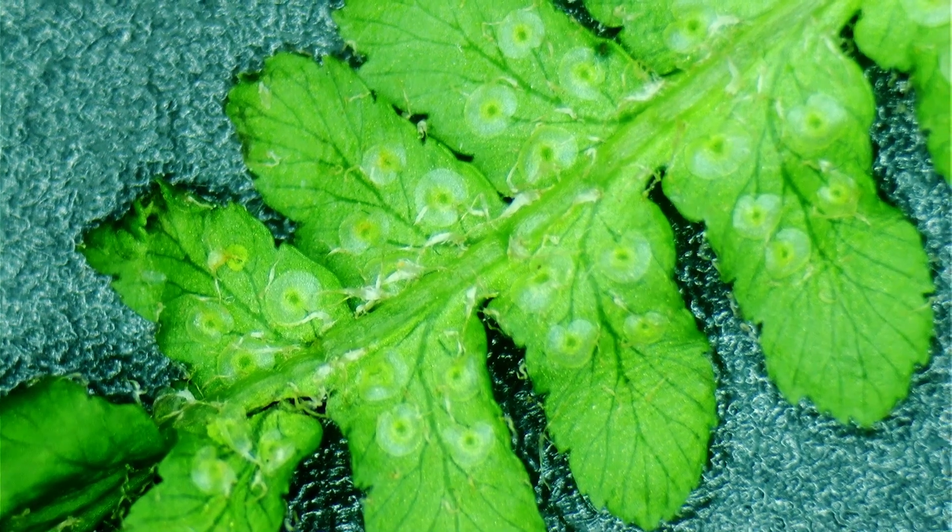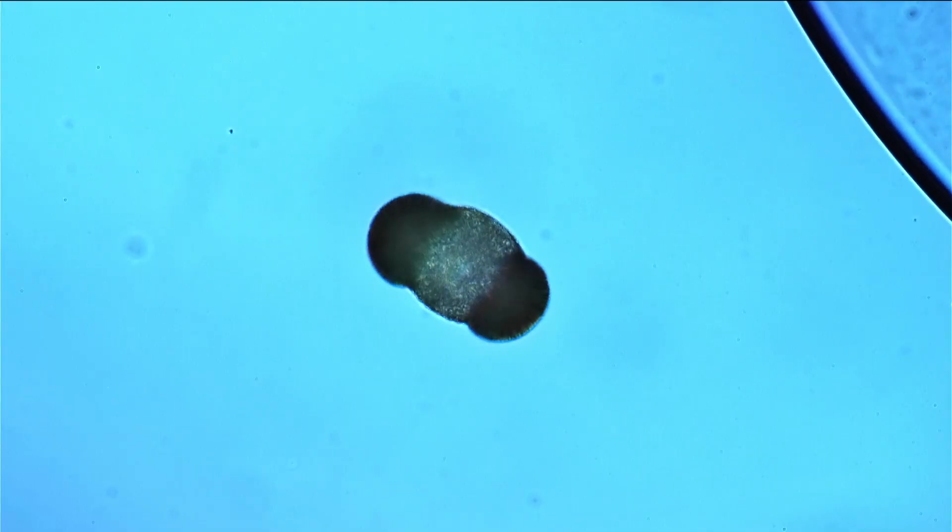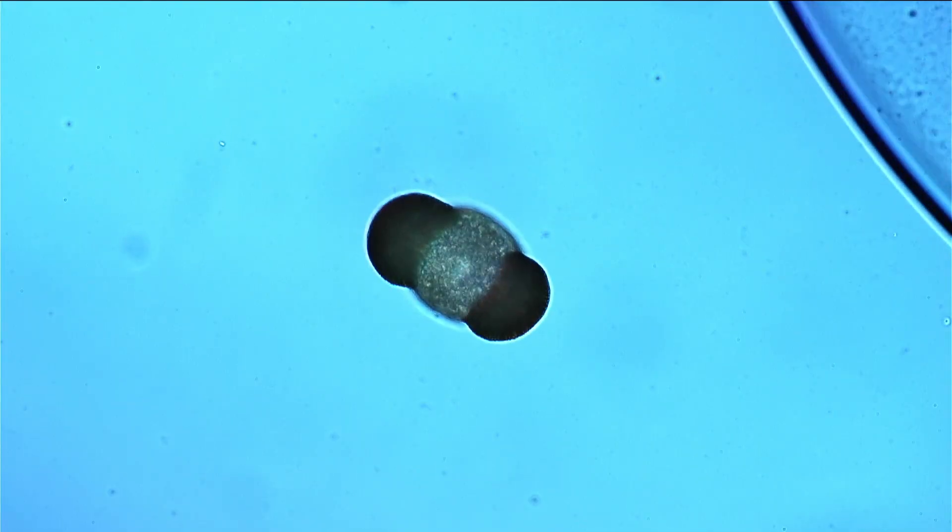Those sperm and eggs, they of course fertilize. When you have fertilization happening, you have a fertilized egg cell, it starts to divide again. Then out of this tiny plant grows a big plant, a new fern plant. This big fern plant produces those spores again.